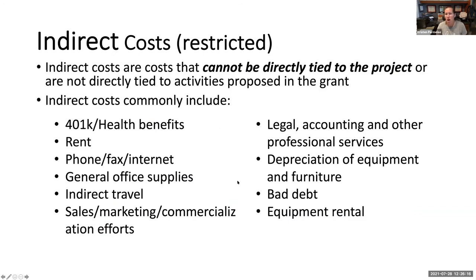Indirect costs are moderately restricted compared to the fee and compared to direct costs. There are costs that cannot fit in any bucket tied directly to the project — they're just general operating expenses. They commonly include things like your phone, utilities, general office supplies, legal and accounting services not related to intellectual property, depreciation of your equipment, equipment rental, health benefits, time off — all that kind of stuff is indirect costs.